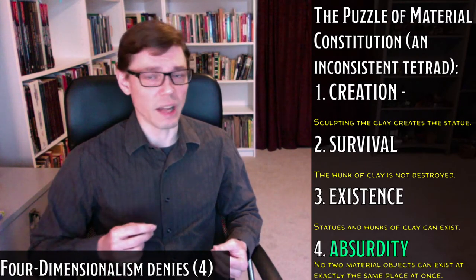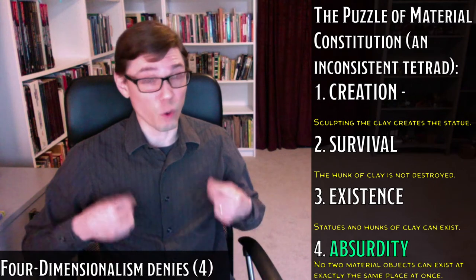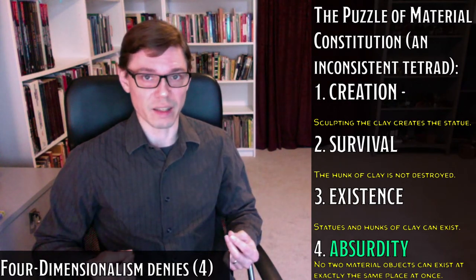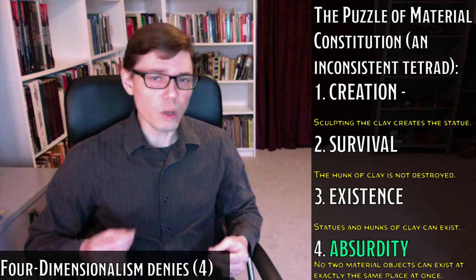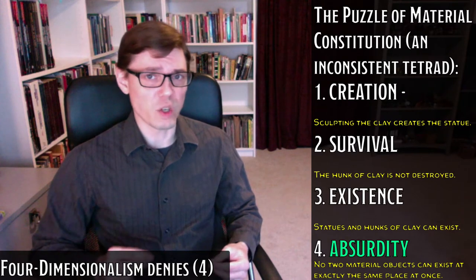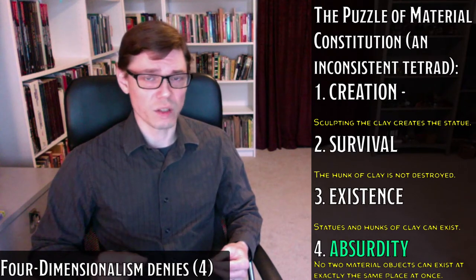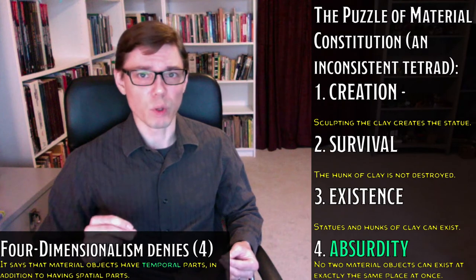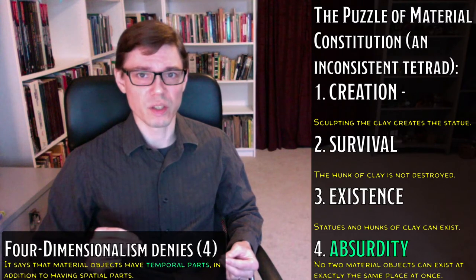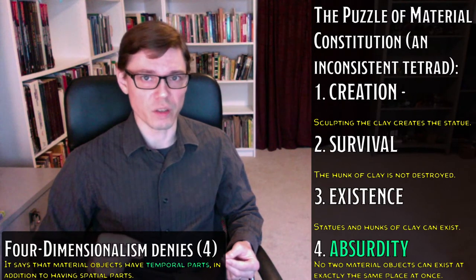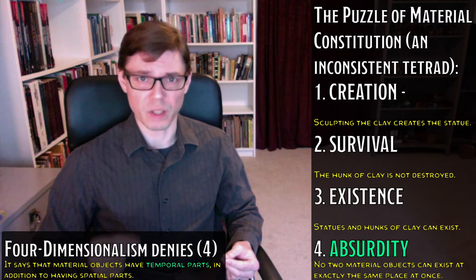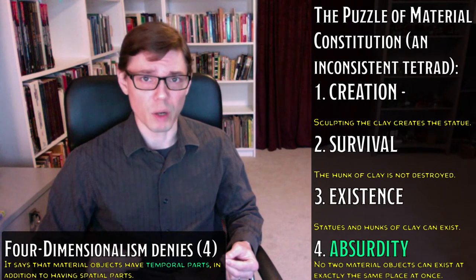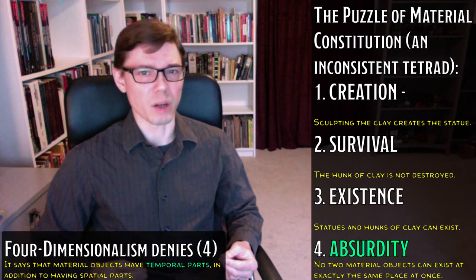The four-dimensionalist has an explanation for why you can have two things in exactly the same place at once. According to the four-dimensionalist, material objects have temporal parts. That's what four-dimensionalism says specifically — that material objects have temporal parts, as well as spatial parts.